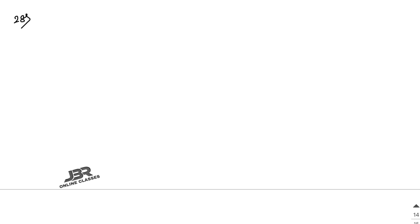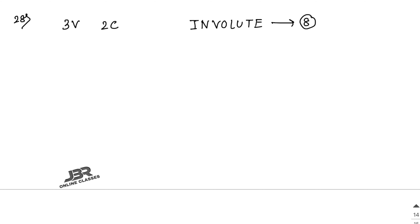Next, sum number 28: How many words, with or without meaning, each consisting of 3 vowels and 2 consonants, can be formed with the letters of the word VIOLET? The letters V, I, O, L, E, T — that's 8 letters total.